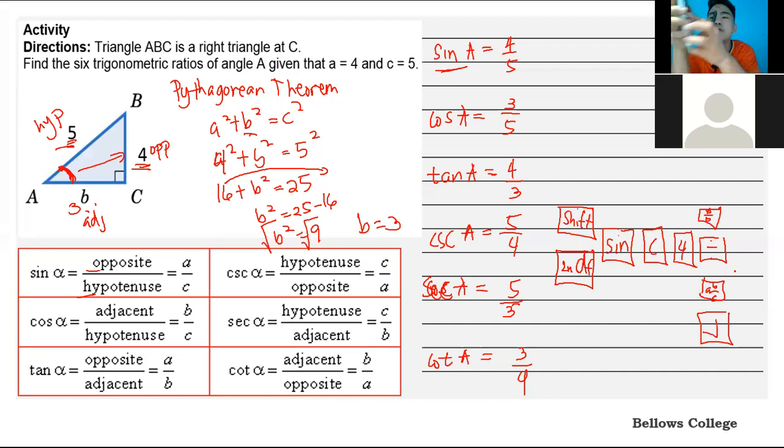Since mine has a fraction function, I'll press shift, then sine, then 4 over 5. Close it and press equals. The answer is 53.13. This is our angle in decimal form.